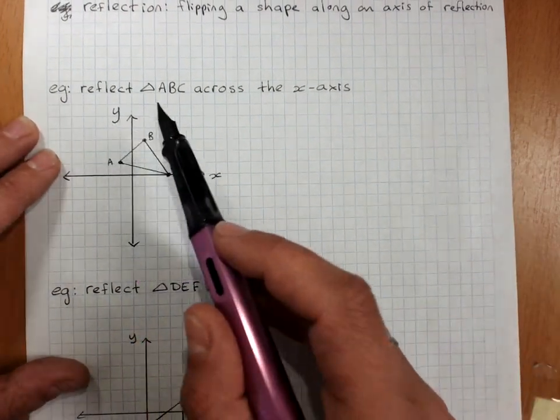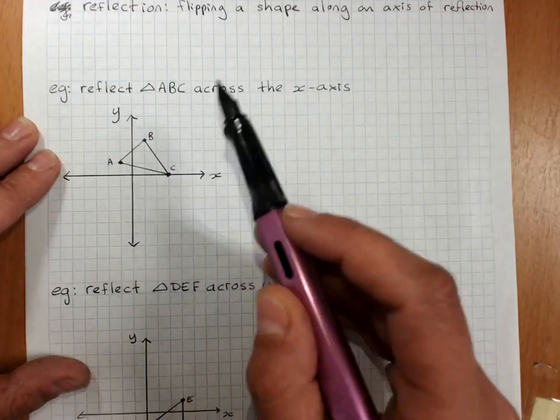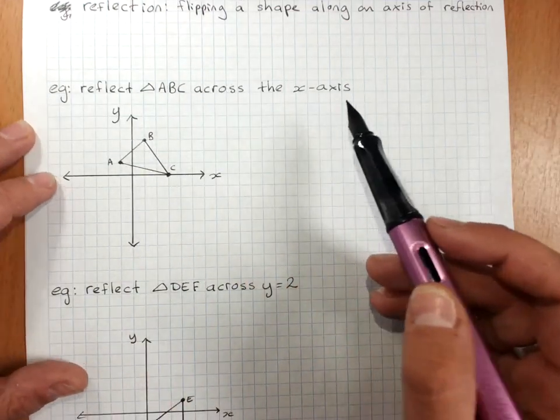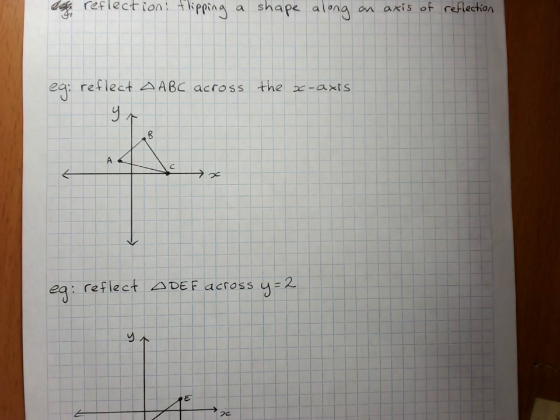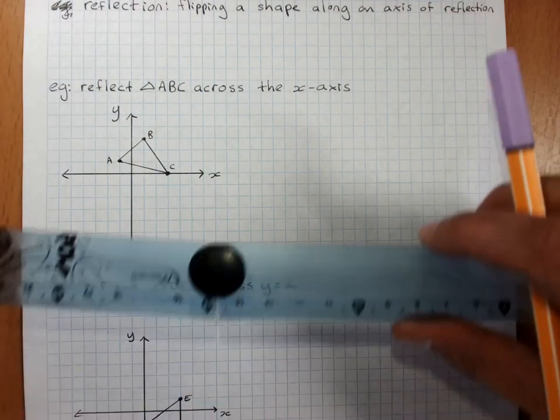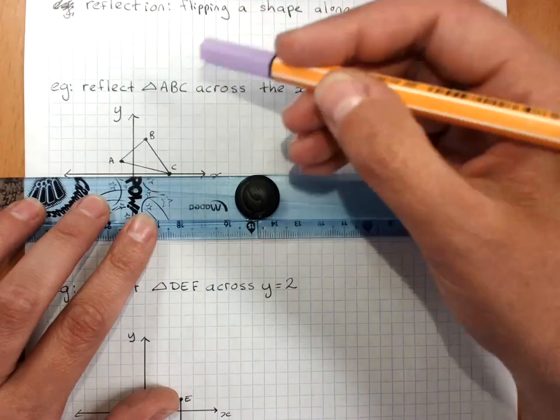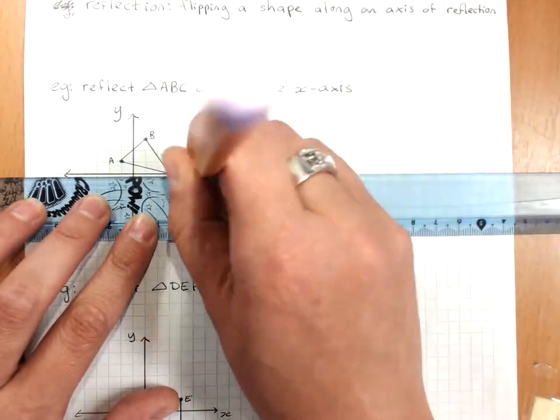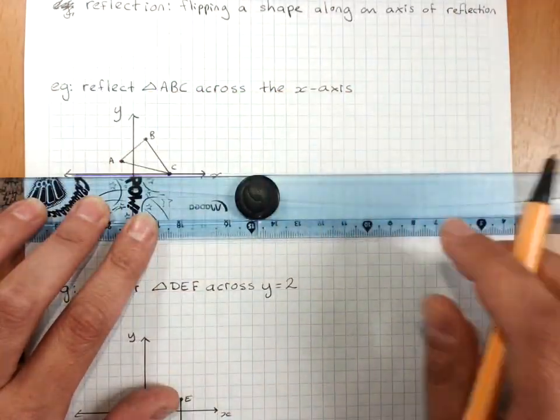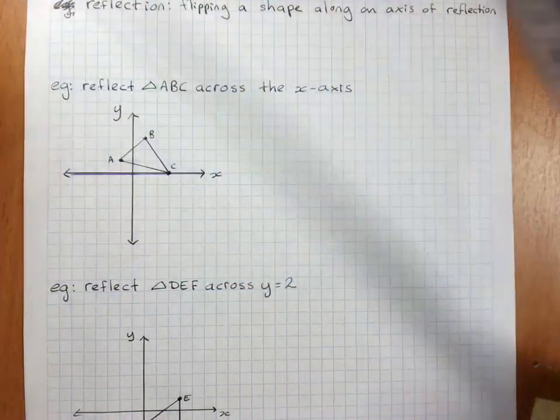So for example, reflect triangle ABC across the x-axis. That says that the x-axis is acting like a mirror. I'll see if I can get a different color showing up for our x-axis here. So our purple x-axis is our mirror.